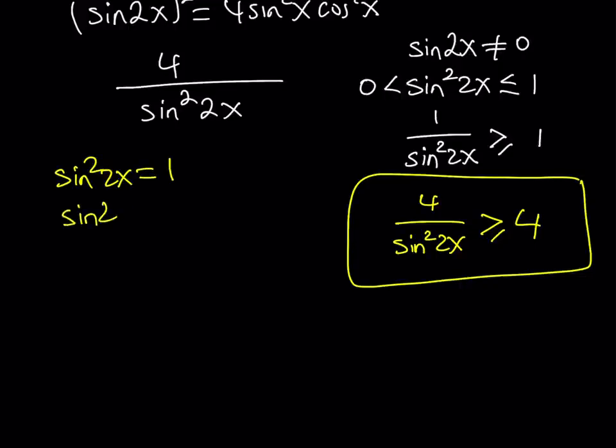And this means that sine 2x is equal to 1 or sine 2x is equal to negative 1. In these cases we just have to be careful that sine x or cosine x does not equal 0. Now here's another thing to consider. We kind of showed that this expression is greater than or equal to 4 but is 4 attainable.